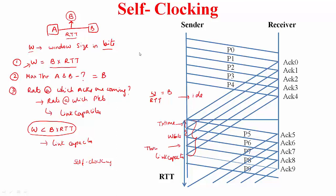W matters in the sense that during idle time you still want to keep sending packets. Self-clocking — where the rate of arrival of ACKs conveys information about the link capacity — is a very useful feature.